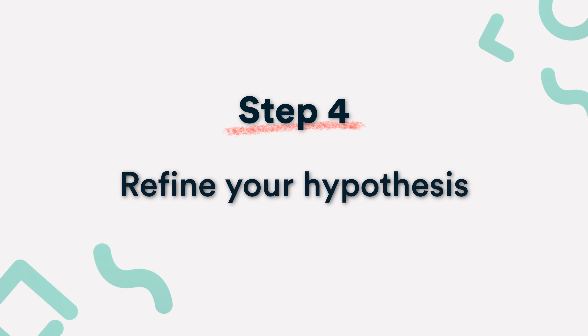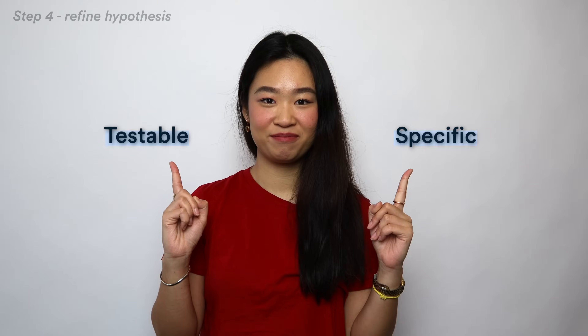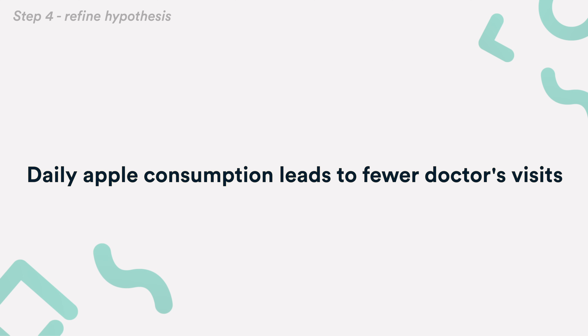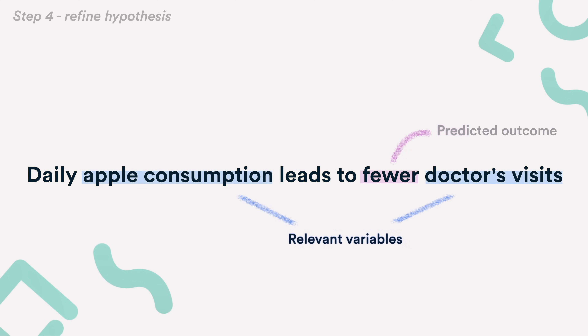Step 4: Refine your hypothesis. In this step, you have to make sure the hypothesis is specific and testable. It should also contain the relevant variables, the predicted outcome of the experiment or analysis, and the specific group being studied. So let's set our target group to people who are over 60 years old.